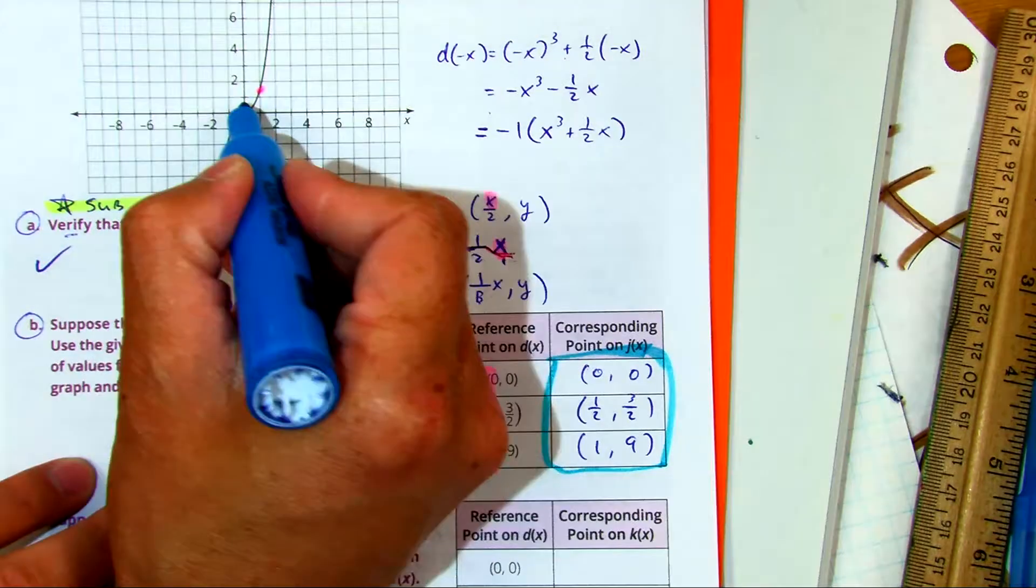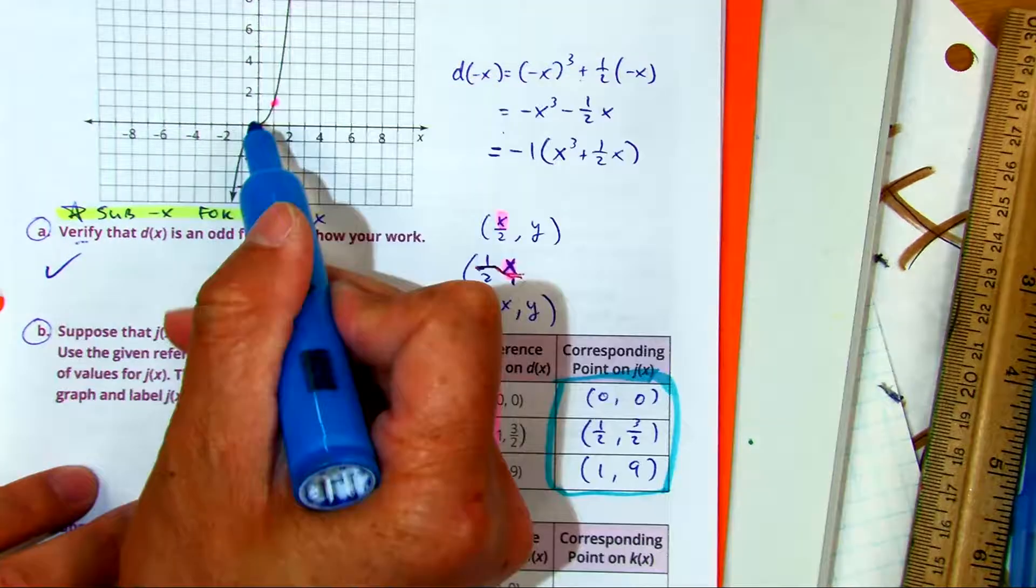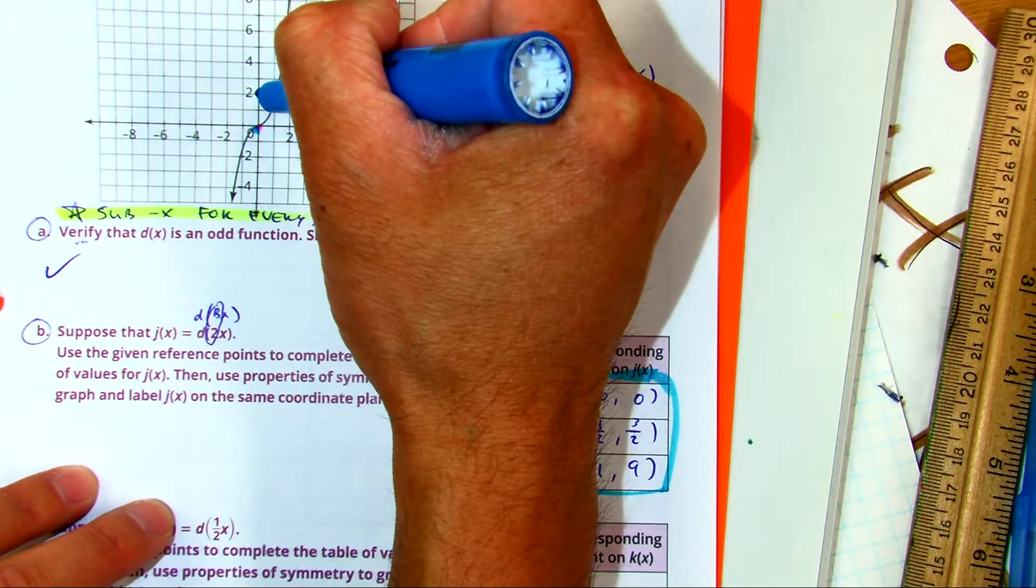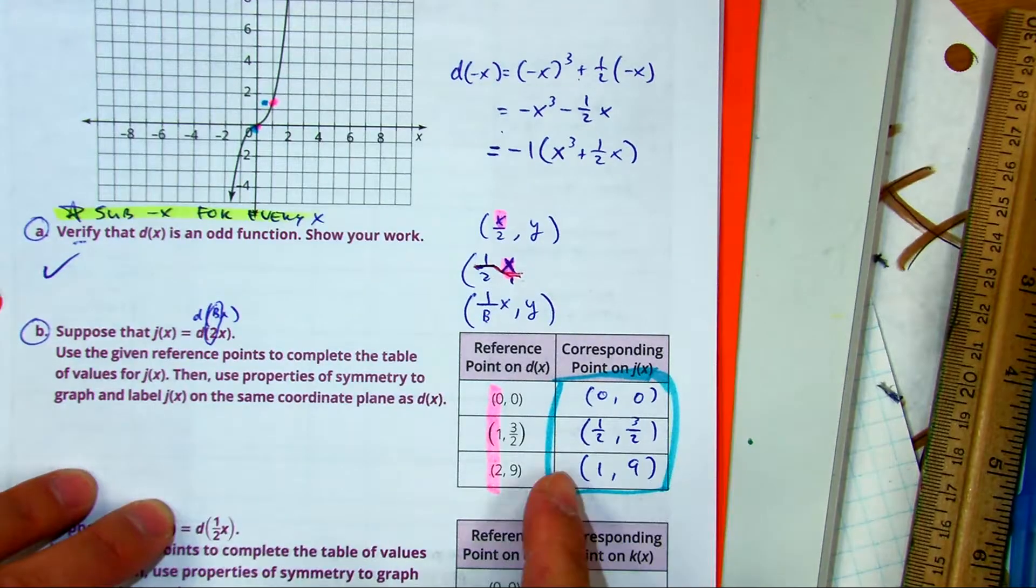1 and a half, 3 halves. So I'm going to the right 50 cents. And then I'm still going up the same amount of height. 3 and a half. Right 1 up 9.